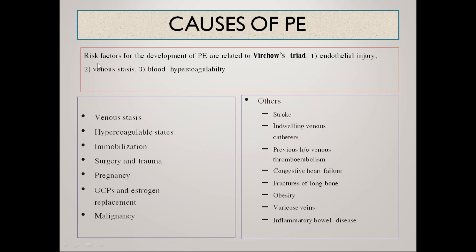The risk factors for the development of pulmonary embolism are related to Virchow's triad, which includes endothelial injury, venous stasis, and blood hypercoagulability. Predisposing conditions include venous stasis, hypercoagulable states, immobilization, surgery and trauma, pregnancy, OCP use and estrogen replacement therapy, malignant conditions, stroke, indwelling venous catheters, previous history of venous thromboembolism, congestive heart failure, fractures of long bones such as the femur, obesity, varicose veins, and inflammatory bowel diseases.